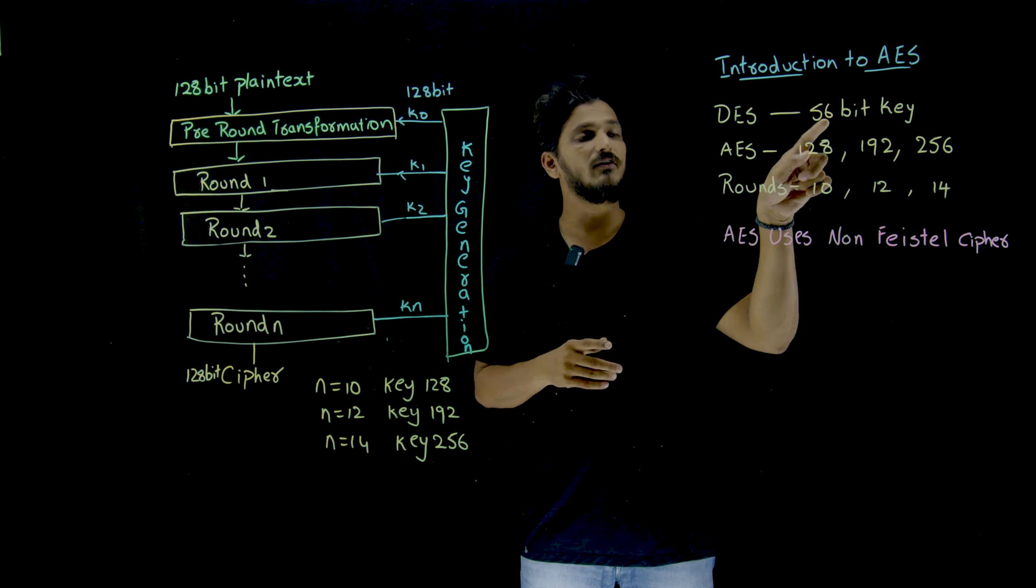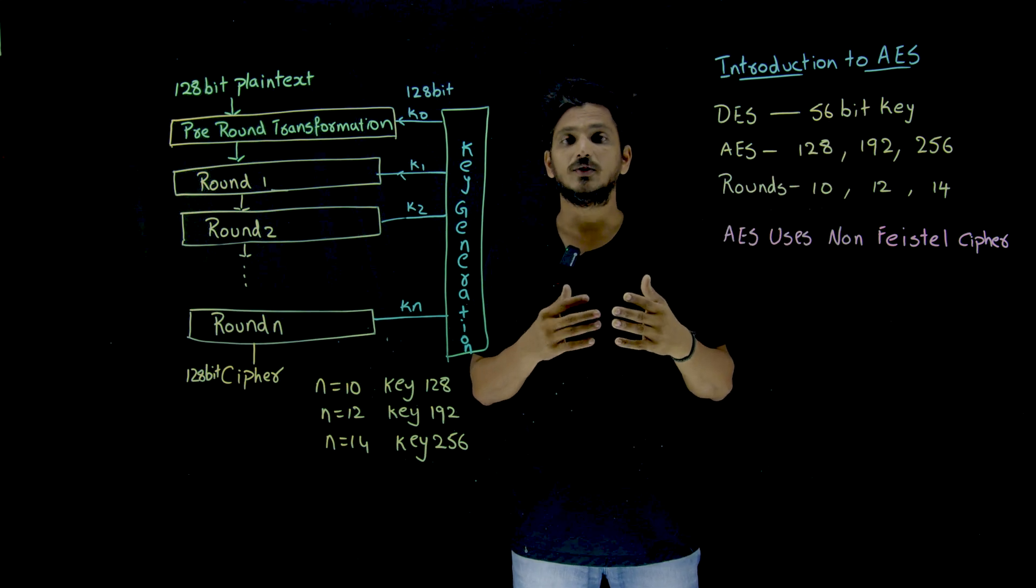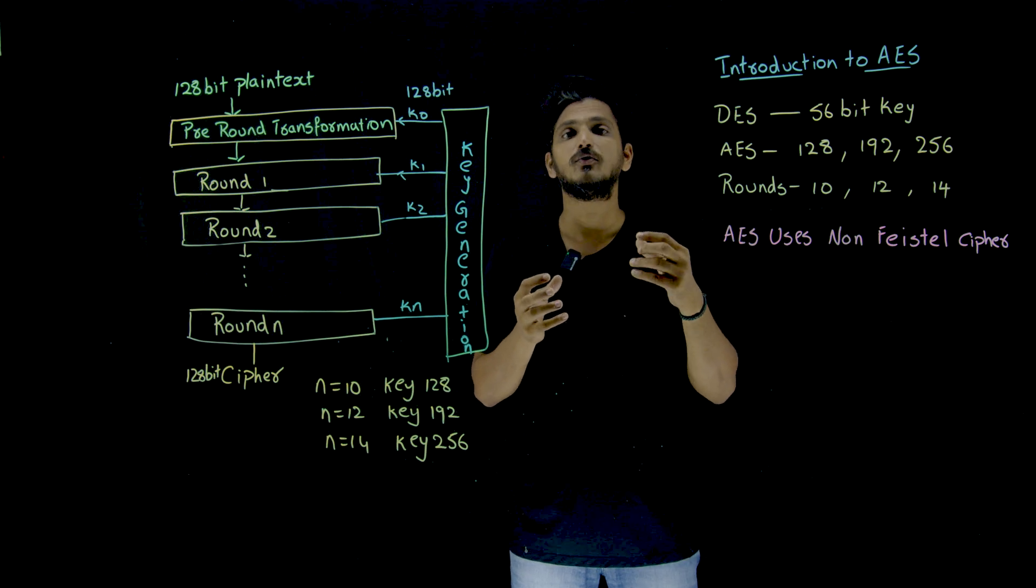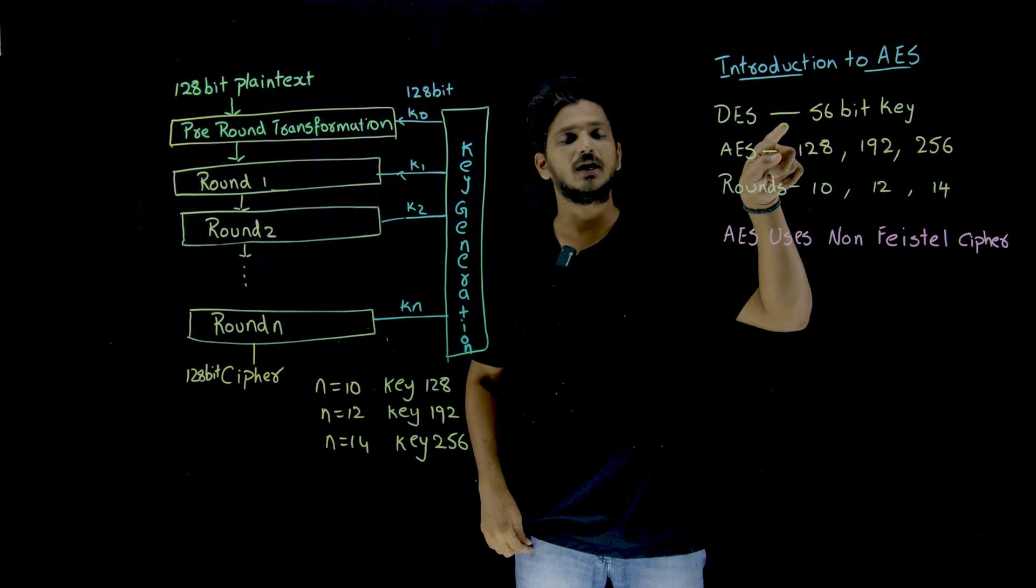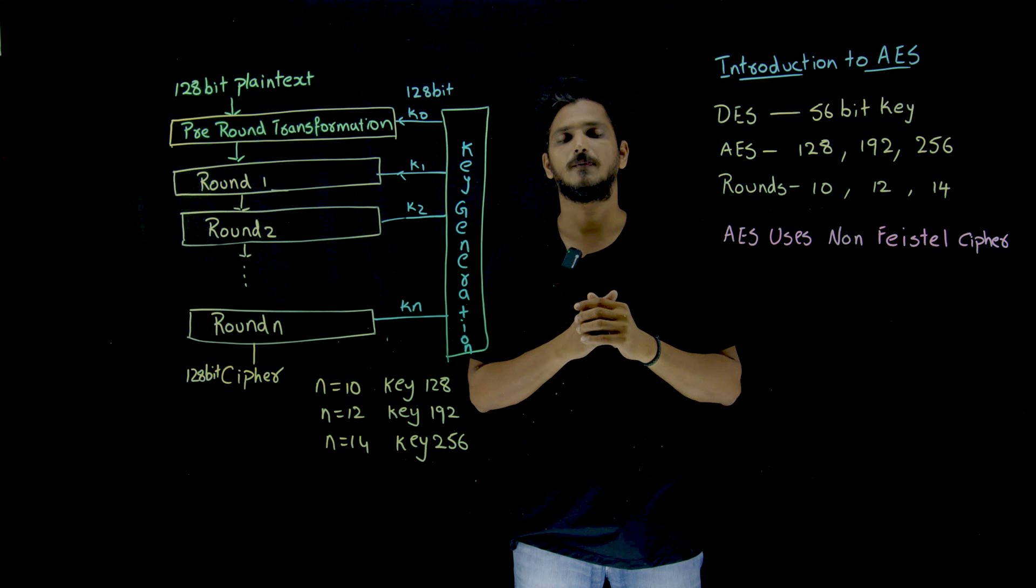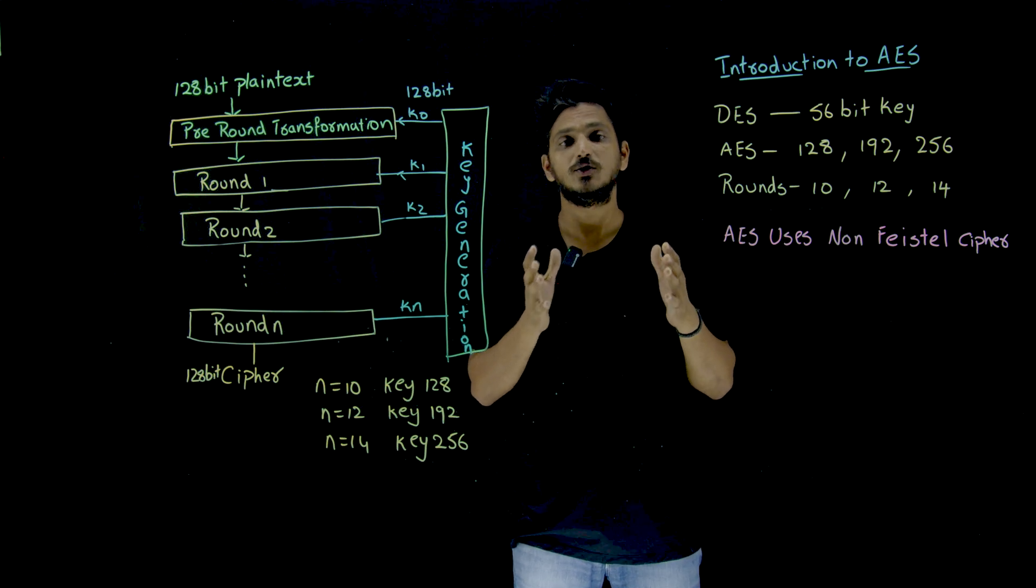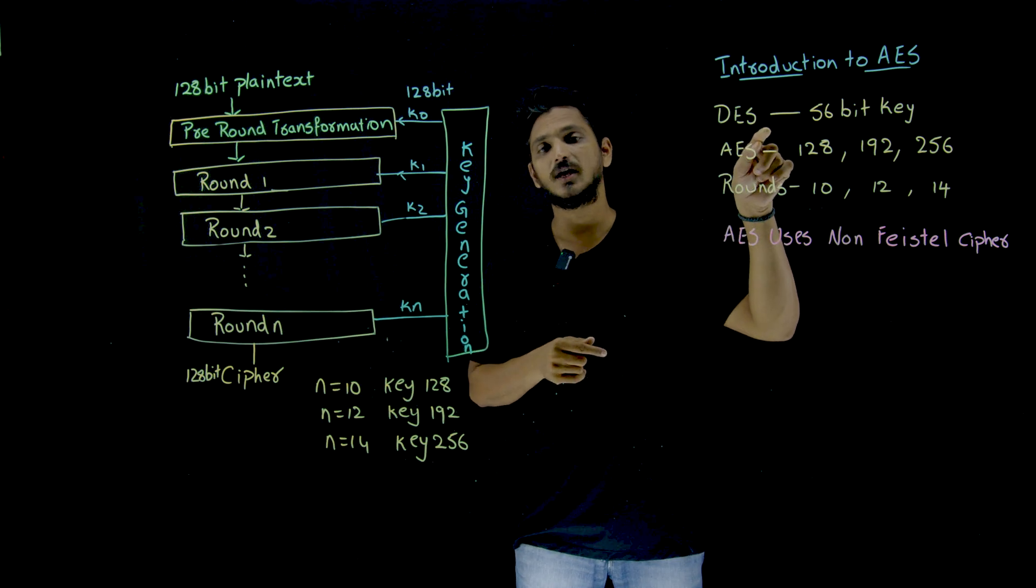See, in DES, we are having a 56-bit key, meaning there is a chance to identify the key using brute force algorithm. What are the total possibilities we have in order to identify the key? Two power 56 key possibilities are there. So if you have the fastest computer, then you can easily identify the key. That is what we have discussed there in DES.